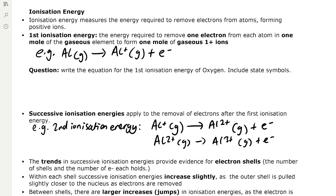Ionisation energy measures the energy required to remove electrons from atoms forming positive ions. The first ionisation energy — and this is one you need to remember — is the energy required to remove one electron from each atom in one mole of the gaseous element to form one mole of gaseous 1+ ions. For example, the first ionisation energy of aluminium: one mole of gaseous aluminium forms one mole of gaseous aluminium 1+ ions and an electron is removed.